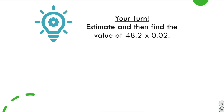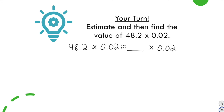Your turn again. Solve and then I'll go over the answers with you after you submit. First estimate 48 and 2 tenths times 200. Submit: what did you round the first factor to? We keep 200 the same — one non-zero digit. Rounded to the greatest place value, 48 and 2 tenths becomes 50.